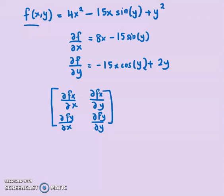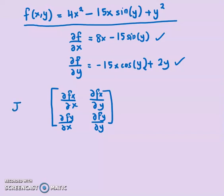If you look at this equation, it's two-dimensional — x and y. So if you're given a function of x and y, we need to find the Jacobian as a 2×2 matrix, also known as the Hessian matrix. First, for the given function, find the derivative with respect to x: I have 8x minus 15x. Then find the derivative with respect to y: sine y gives you cosine, so I have negative 15x·cos(y) plus 2y. Once you've written it in this form, you can find the Jacobian matrix.